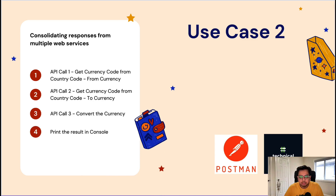In the second use case, which enhances the first, the same API call will give me the currency code if I provide the country code — that's my from currency. A second API call will give me the to currency. And in the third API call, I'll be converting from currency to to currency and finally printing the result in console.